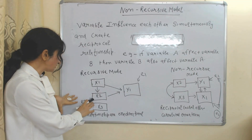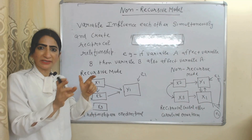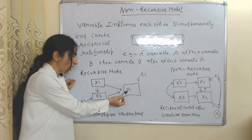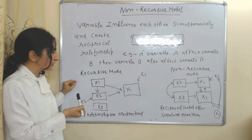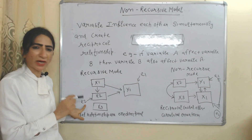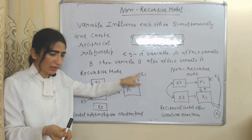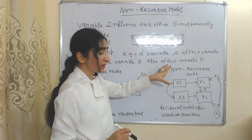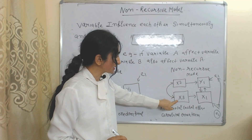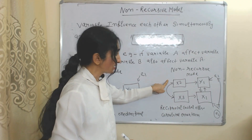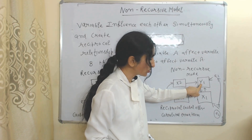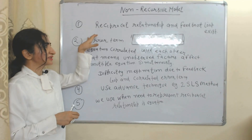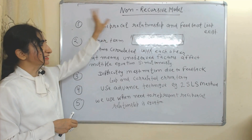In the recursive model, causal relationships are in one direction: X1 influences X2 but X2 does not influence X1. But in the non-recursive model, we have reciprocal causal effects — if X2 influences X3, then X3 also influences X2. Similarly, if Y1 influences X1, then X1 also influences Y1. Additionally, error terms E1 and E2 are correlated with each other in the non-recursive model.